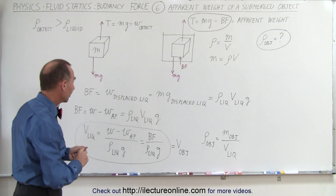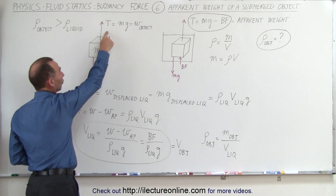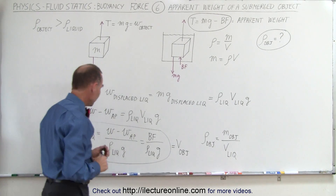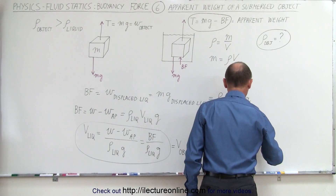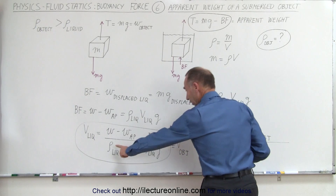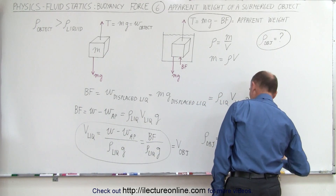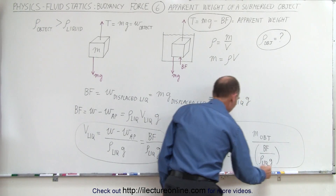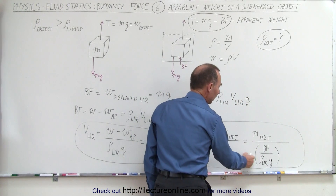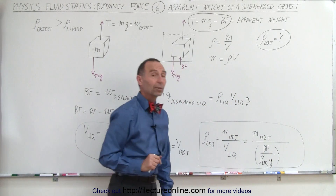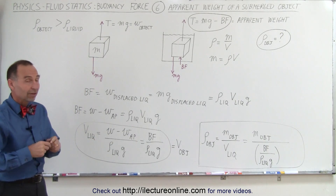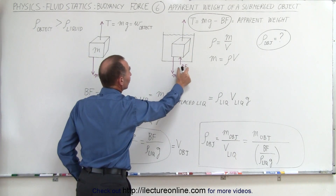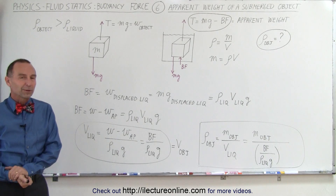I can find the volume of the object by taking the difference of the two measurements — the weight of the object in air minus the weight when it's submerged, which is the buoyancy force — divided by the density of the liquid times g. So the density of the object equals the mass of the object divided by the buoyancy force divided by the density of the liquid times g. Simply take the mass of the object and divide by that ratio, and that's how we find the density of the object using the concept of apparent weight. The difference between the real weight and the apparent weight is the buoyancy force on an object submerged in a liquid.